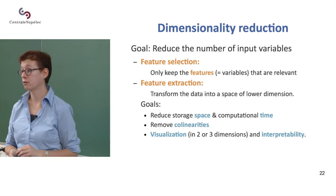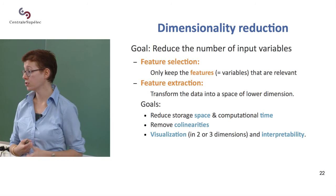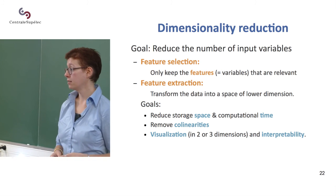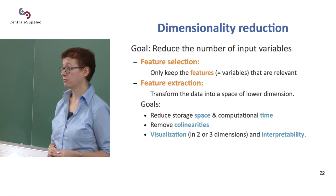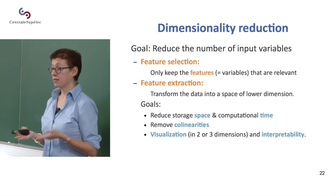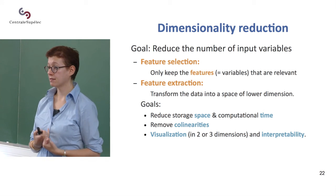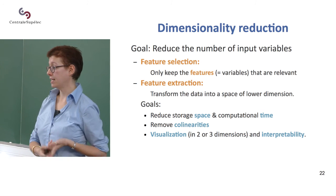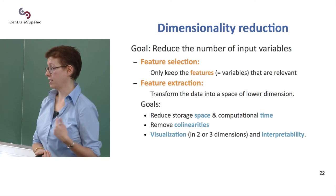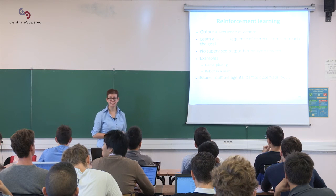If instead of 3,000 dimensions I only need three, I need less storage space, and I probably need less computational effort to process those three dimensions.